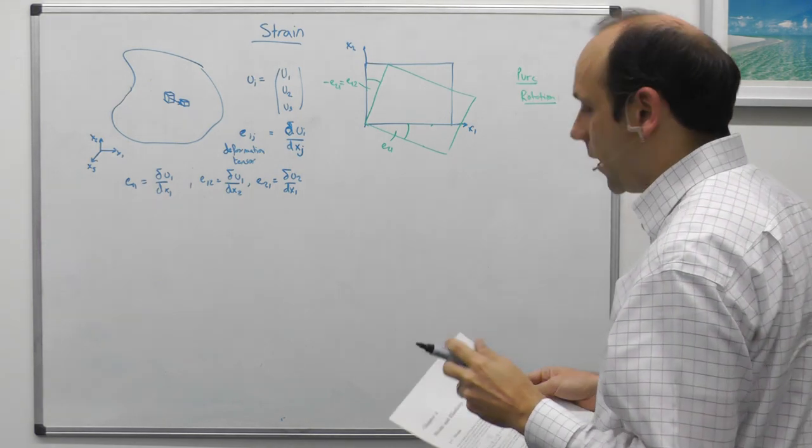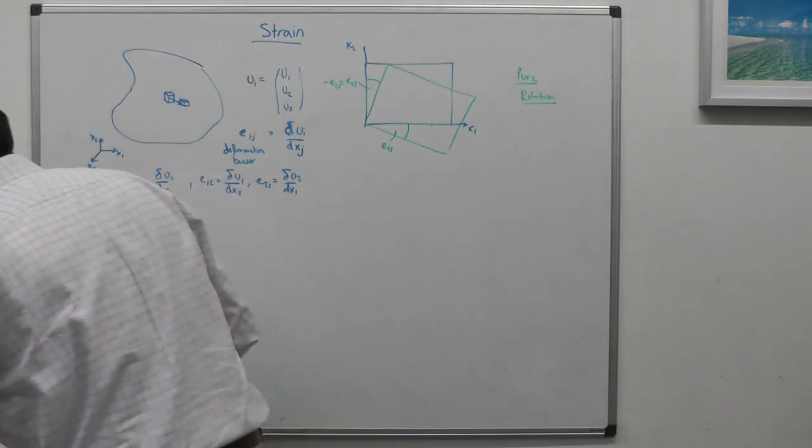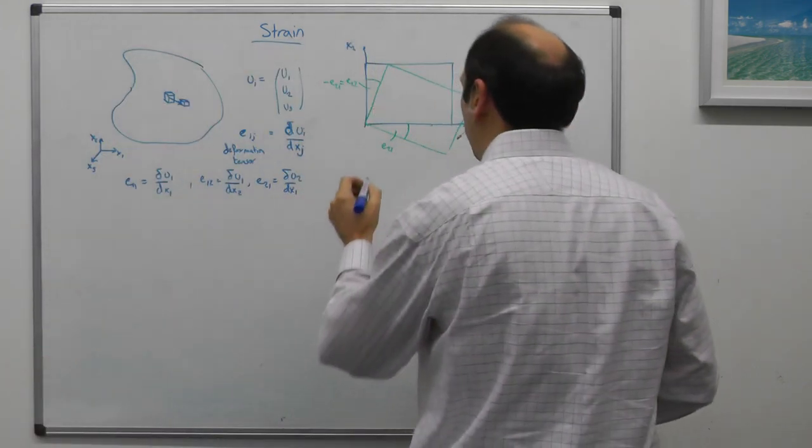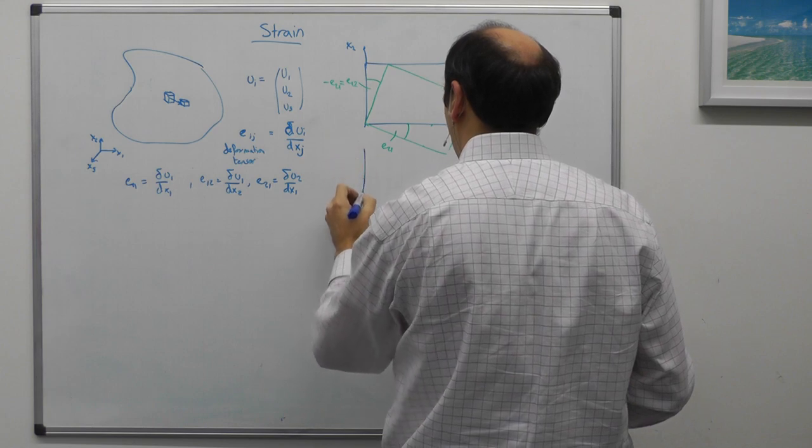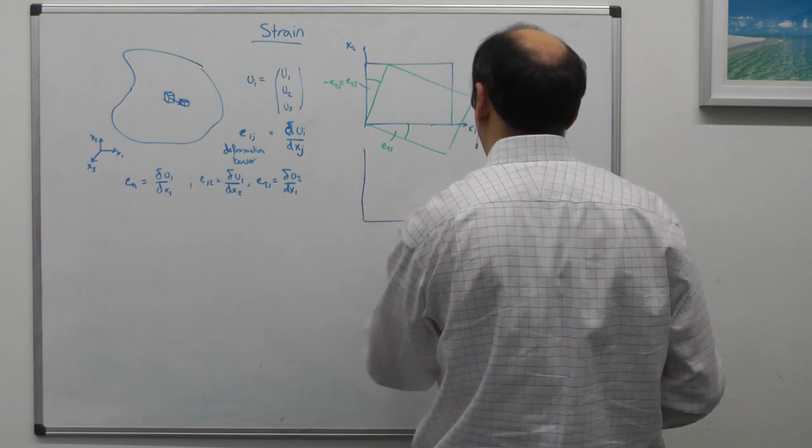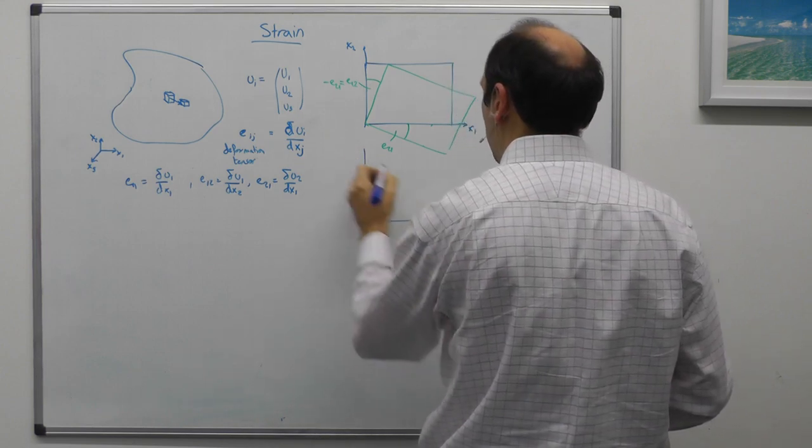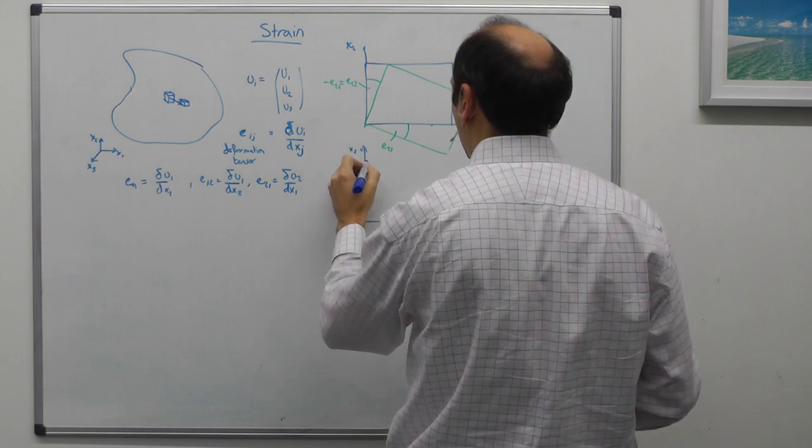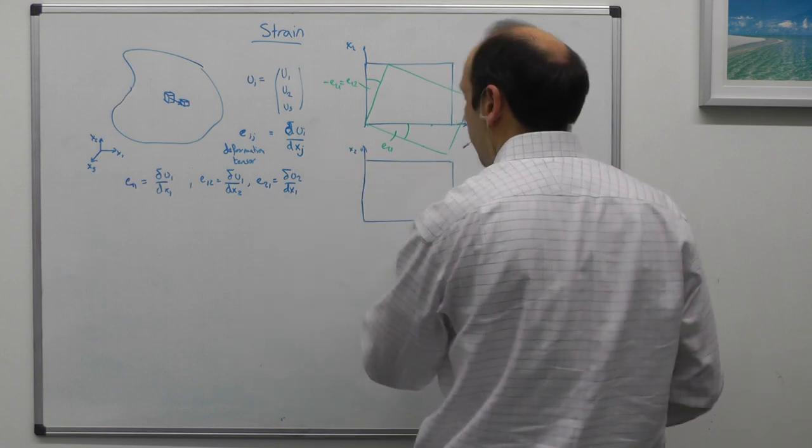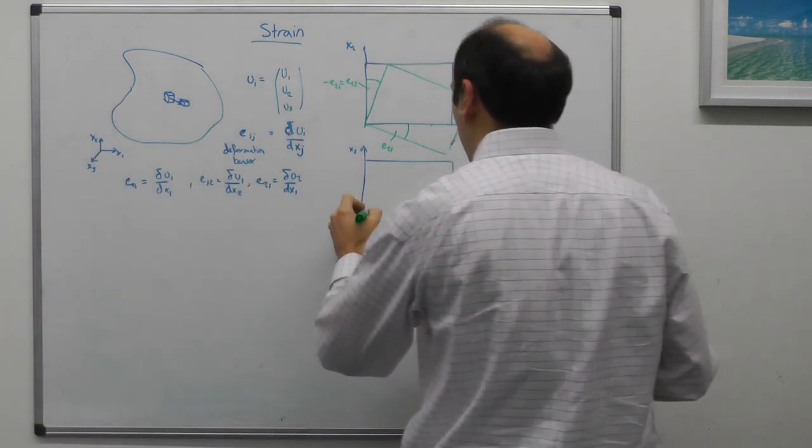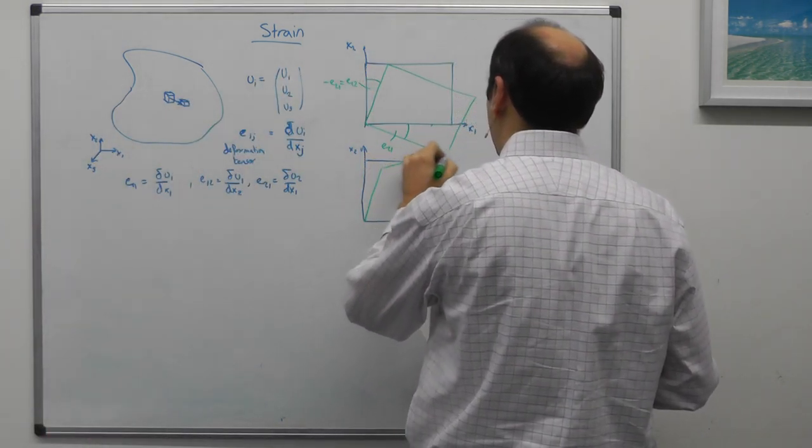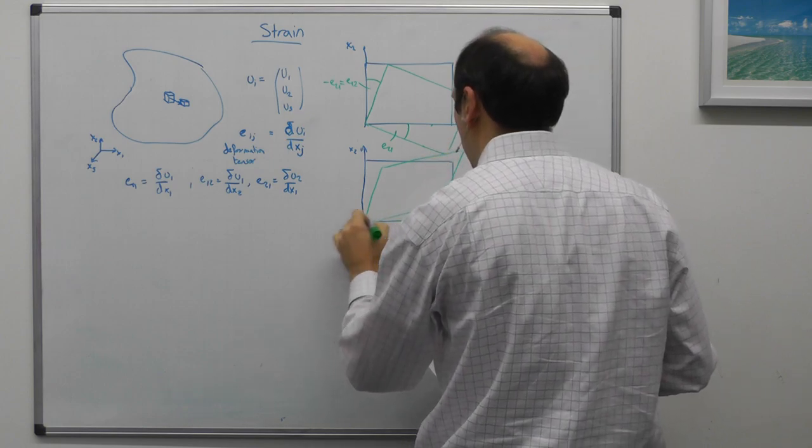Now, there's another type of deformation we can have, if we think of our infinitesimal body again. There's x1, there's x2, there's our original body, and that's what's called pure shear, and in pure shear, the body distorts to be something like this.